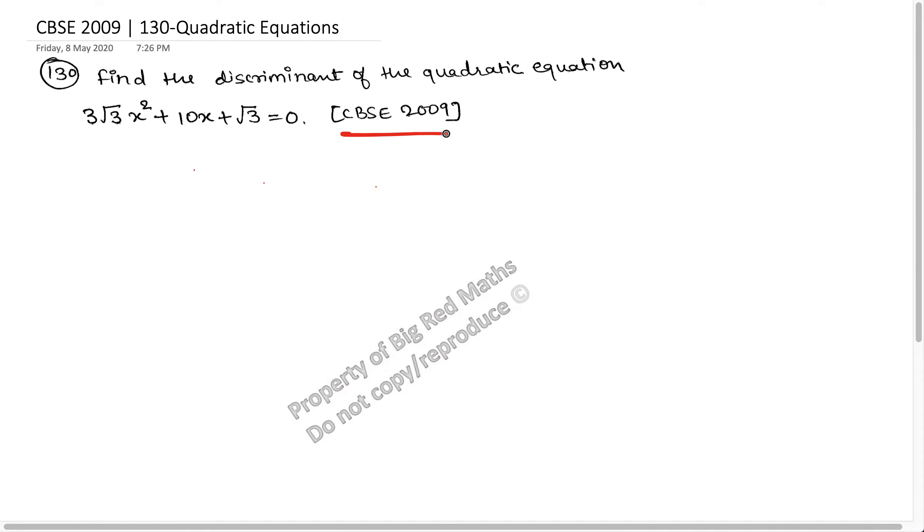The question is to find the discriminant of the quadratic equation. The value of D is b²-4ac. If we look at the equation, we know that a value is 3√3, b is 10, and c is √3.